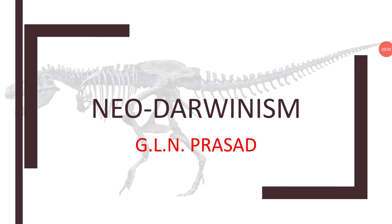My dear students, in this class let us learn about Neo-Darwinism. Neo-Darwinism is understanding Darwin in a new perspective, in a new dimension. We know pretty well that Charles Darwin proposed various theories like prodigality of the species, constancy of population, struggle for existence, survival of the fittest, natural selection and origin of species. All these theories and postulates of Charles Darwin were supported by Neo-Darwinists — the group of scientists who supported the Darwinism principle.